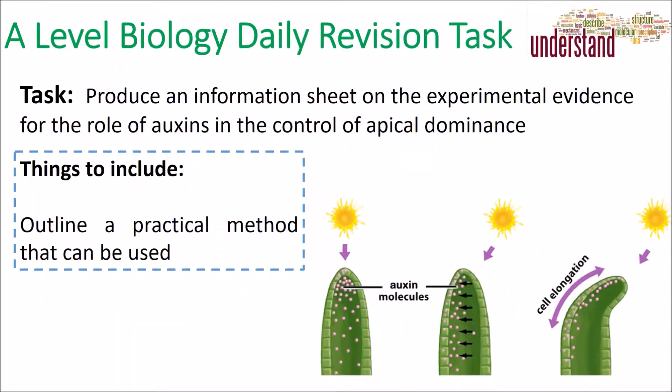Hello biologists, welcome to today's daily A-level biology revision task. In today's task you are asked to produce an information sheet on experimental evidence for the role of auxins in control of apical dominance.